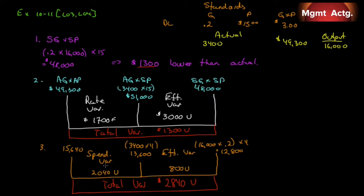So something needs to be looked at. The spending variance is the big one. The efficiency variance is just the difference between labor hours used versus hours that should have been used. Looking back at our labor variances: the rate variance is $1,700 favorable — we might have been sneaking less experienced employees through to create a favorable rate variance. But look what that did to efficiency — made it unfavorable, and that alone will cause an efficiency variance in variable overhead as well.